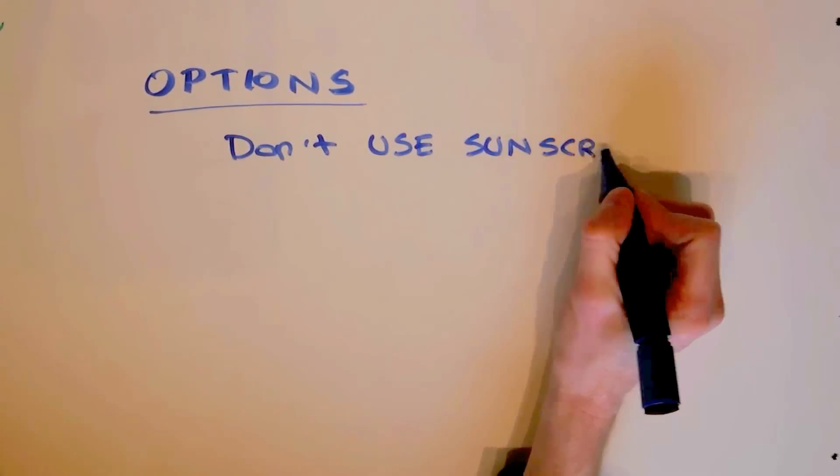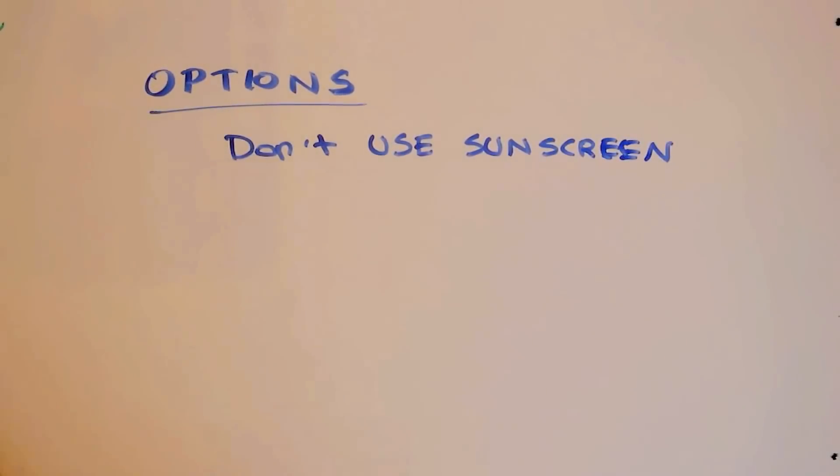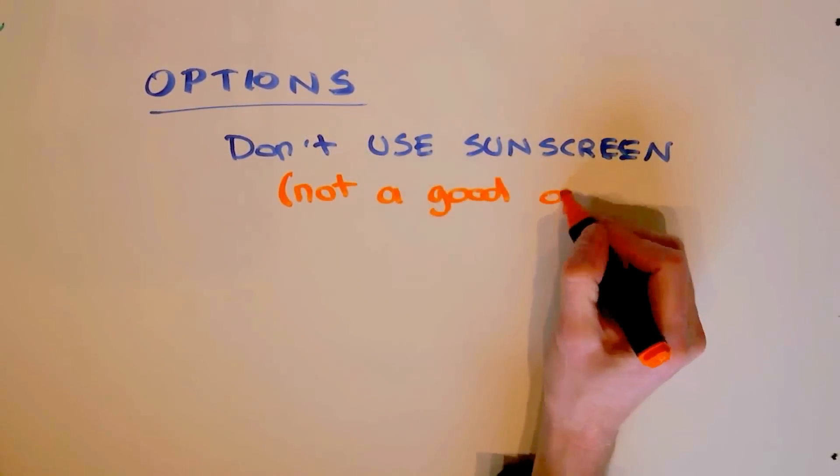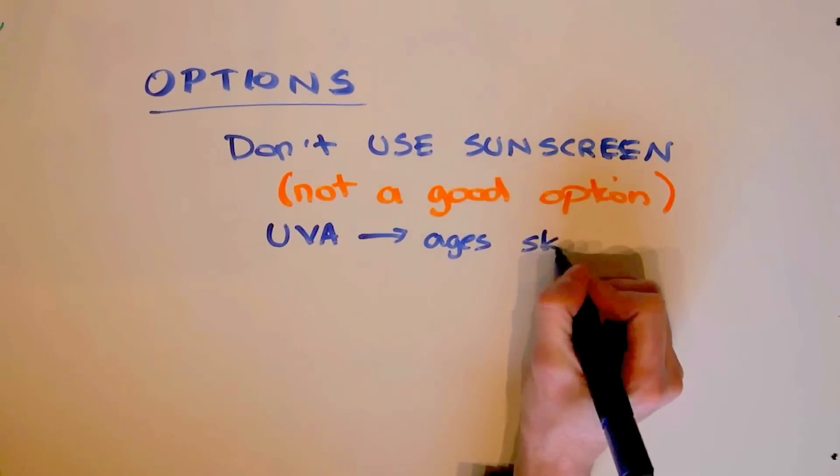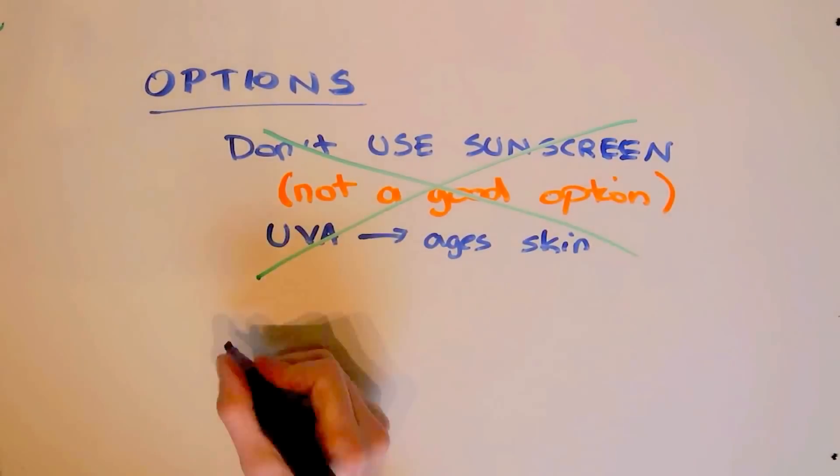So we have some options. So one, of course, would be don't use sunscreen. Now I know what you're thinking. That's crazy. And you're right. That is kind of not really a good option, especially in today's world. We've got the UVA and it ages our skin.